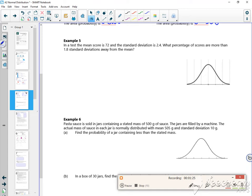So it says, in a test, the mean score is 72 and the standard deviation is 2.4. So I know that x follows a normal distribution, 72, 2.4 squared. What percentage of scores are more than 1.8 standard deviations away from the mean?